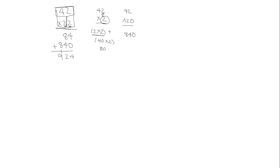So here we're just thinking of this as two multiplication problems — first 42 times 2, and then secondly 42 times 20. We're writing each of those partial products and then adding them to get the total product.